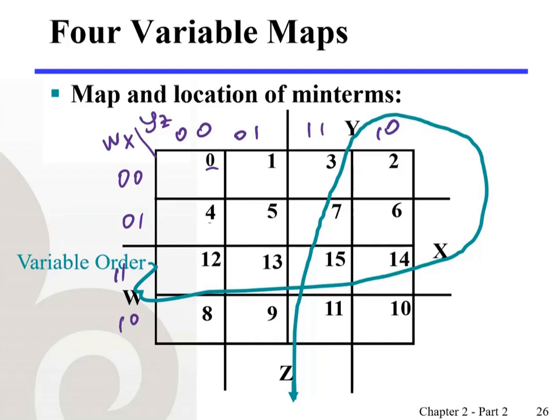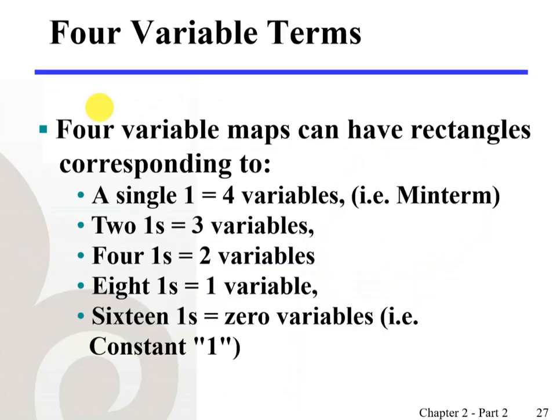So whenever you want to construct a K-map for four variables, remember the variable order pattern. In the case of four variable K-maps, we can have rectangles corresponding to: a single 1 equals 4 variables (a minterm), two 1s equals 3 variables (one variable gets eliminated), four 1s equals 2 variables, eight 1s equals 1 variable, and if you have all 16 cells as ones, then we'll have zero variables or a constant. In K-map, we want to group as many ones as possible in the order of two to the n: 1, 2, 4, 8, 16.